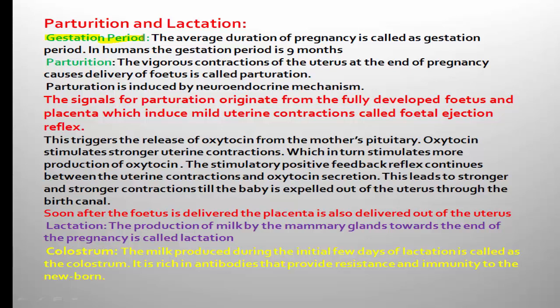One term you need to understand is gestation period. The average duration of pregnancy is called gestation period. In humans, the gestation period is nine months — the total period during which the embryo gets finally transformed into the fetus, the complete baby.